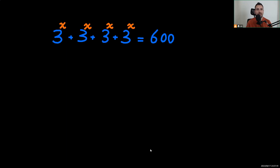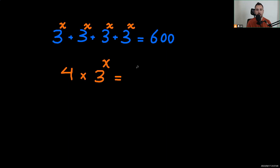Welcome to Mathics. I'm back with a somewhat easy equation to solve in this video and I plan to find a decimal value for x. We have four of these terms, which we can write as four times 3 to the power of x equals 600. Since 600 is divisible by four, let's divide both sides by four, giving us 3 to the power of x equals 150.